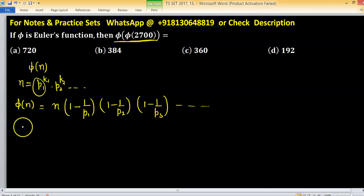We have to find value of phi(2700). So prime factorization of this one will be 3 raised to the power 3 into 10 square. 10 square you can write 2 raised to the power 2 into 5 raised to the power 2. Now apply phi.